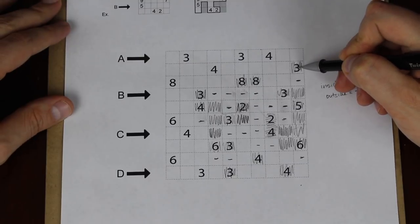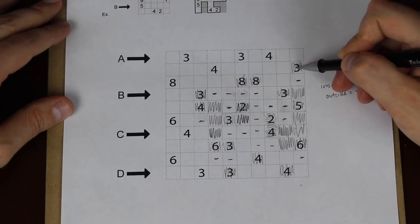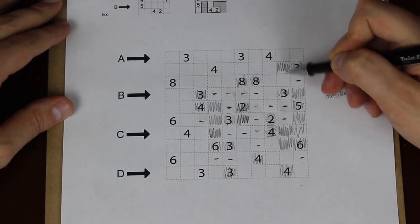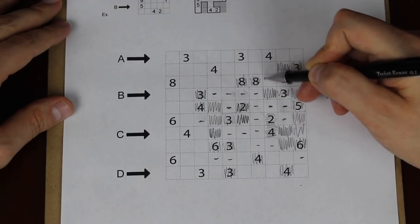Up here we have a 3. It needs to see 3 squares. It can see at most 1 above, so 1, 2. It needs to see 1 more this way. That 3 cannot connect up. It must go horizontally. Fixing the checkerboard.